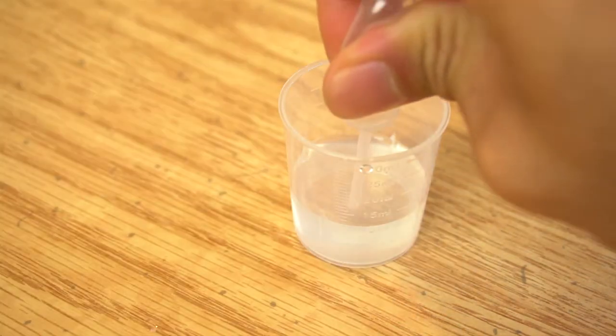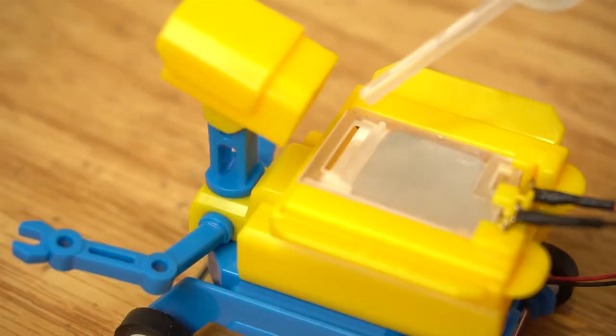Now take the dropper and collect some salt water. You'll need to squeeze about 10 drops, one at a time, into the hole on the battery compartment. Make sure the robot is on a smooth, flat surface when you do this, and let each drop absorb before adding another drop. The robot should start moving on its own. Isn't that cool?